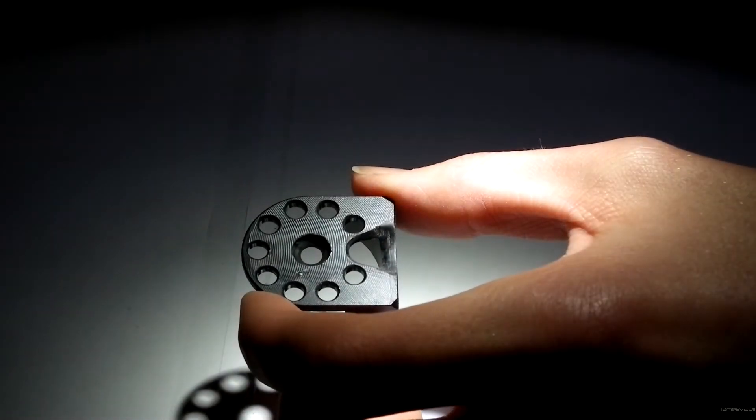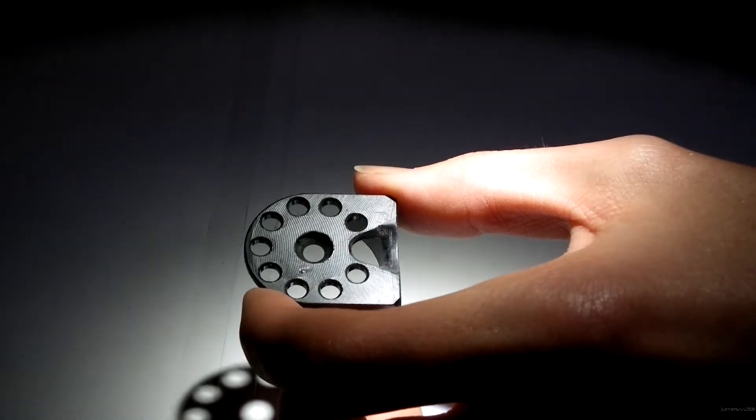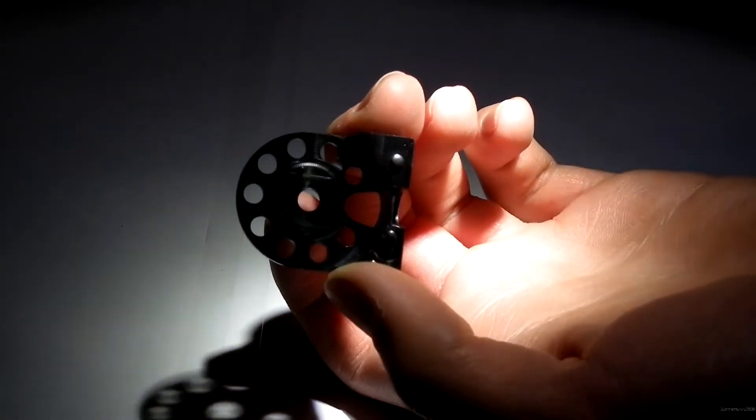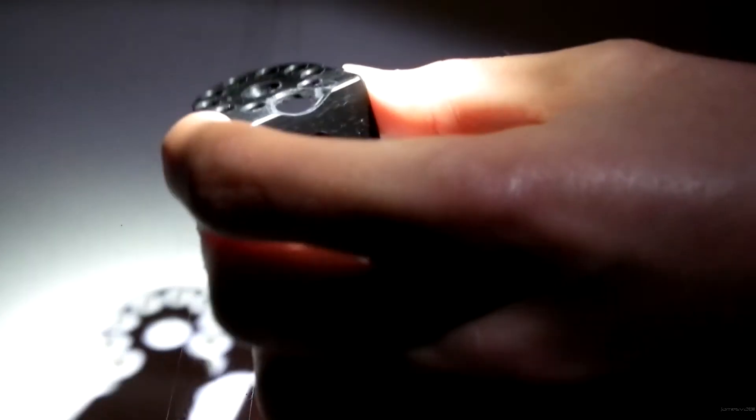Once you're done sanding it and filing it, you should be left with something like this. You can see that there's a much bigger hole, and there's a curve there.